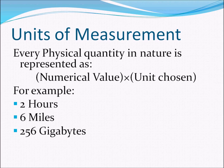There are many examples of this. You might say you will be studying for 2 hours, meaning 2 times the duration of 1 hour. You could say the distance between point A and point B is 6 miles, meaning 6 times the length of 1 mile. When you buy a computer with a hard drive capacity of 256 gigabytes, that means a capacity of 256 times the size of 1 gigabyte.